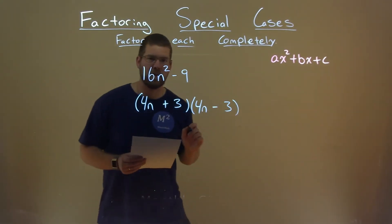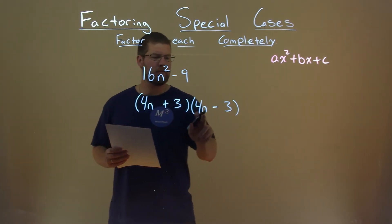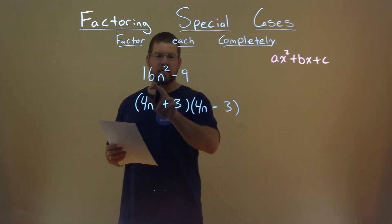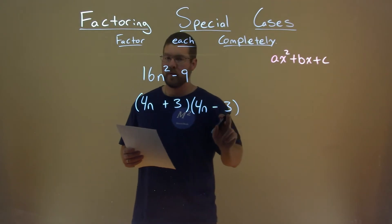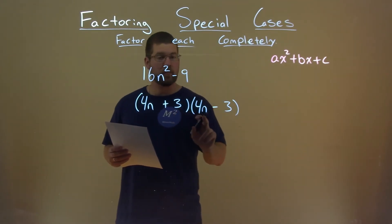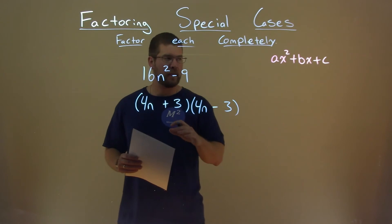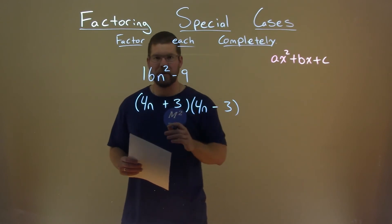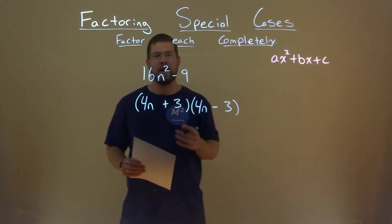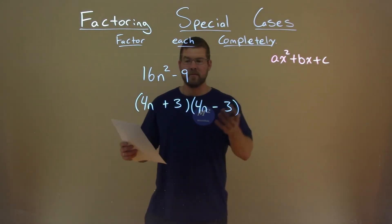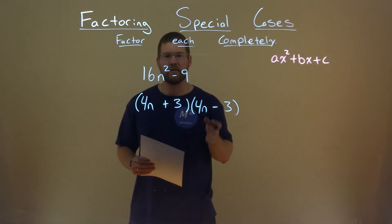So we put a 3 here and a 3 there. 4n times 4n is 16n squared. 4n times negative 3 plus 3 times 4n equals 0 — they cancel each other out, giving us a 0 bx. 3 times negative 3 is negative 9. And there we have our answer: 4n plus 3 times 4n minus 3.